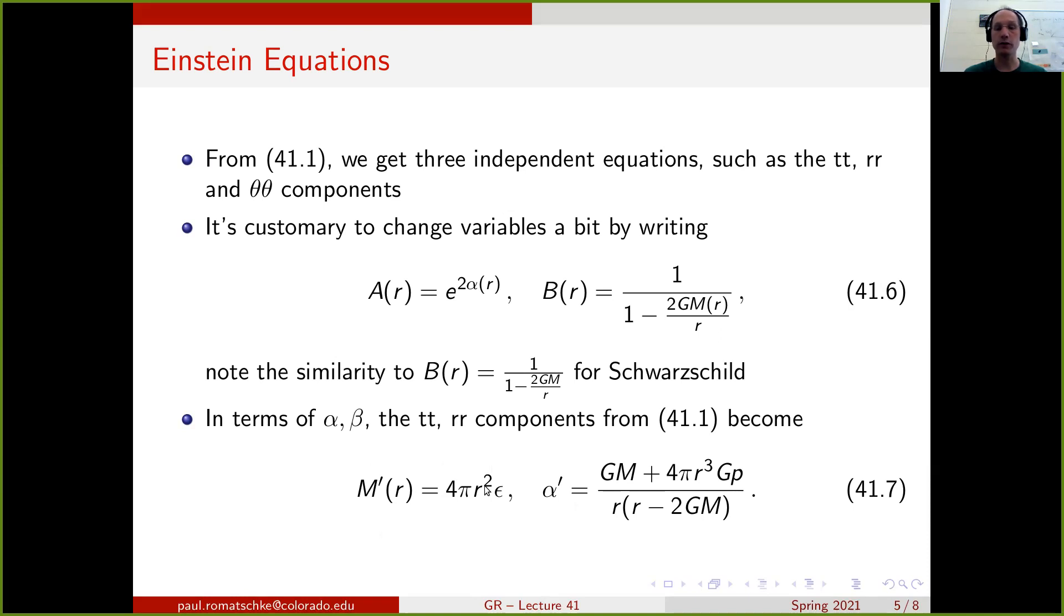and energy density is the mass density. So if we integrate this, we get something with units of mass. So basically, M of r here really is the mass function that we have when we talk about stars in general relativity.